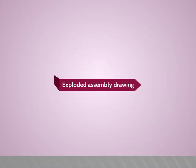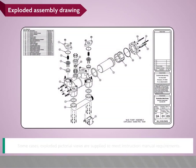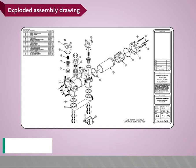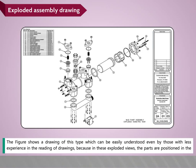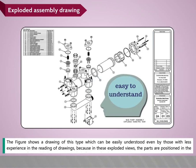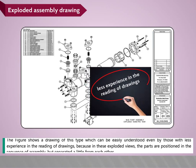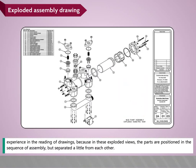Exploded assembly drawing: in some cases, exploded pictorial views are supplied to meet instruction manual requirements. These drawings generally find a place in the parts list section of a company instruction manual. In these exploded views, the parts are positioned in the sequence of assembly but separated a little from each other, making them easily understood even by those with less experience in reading drawings.